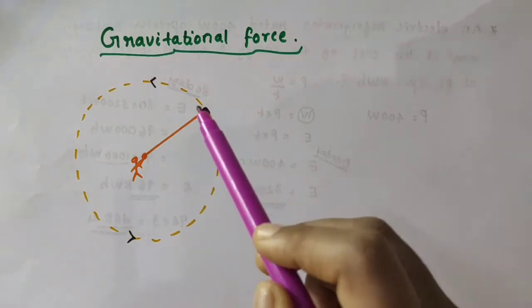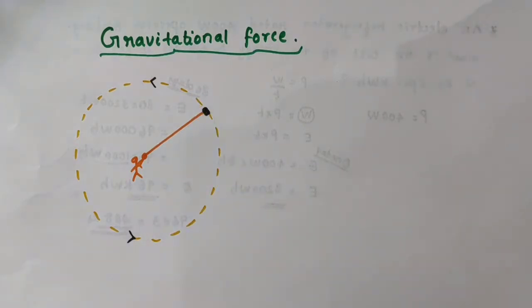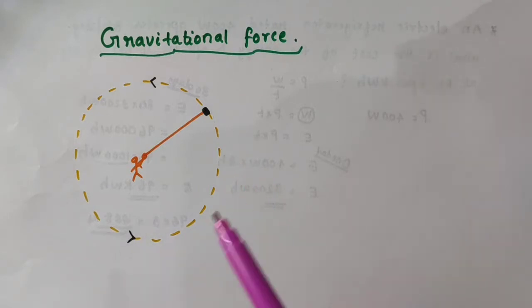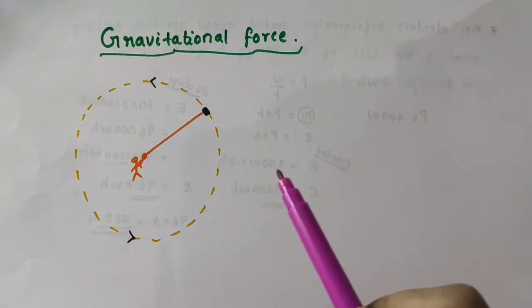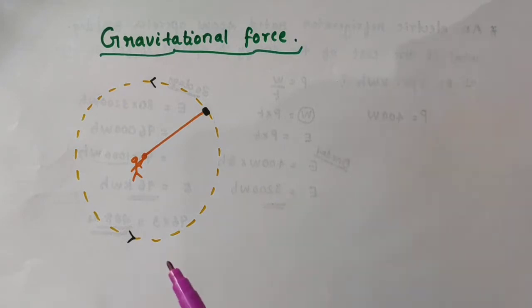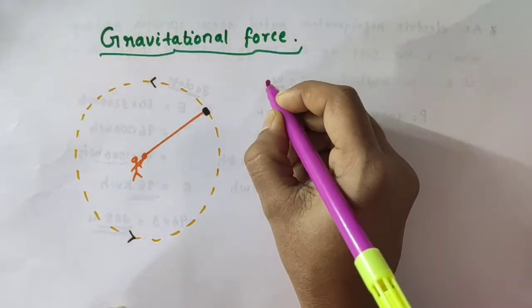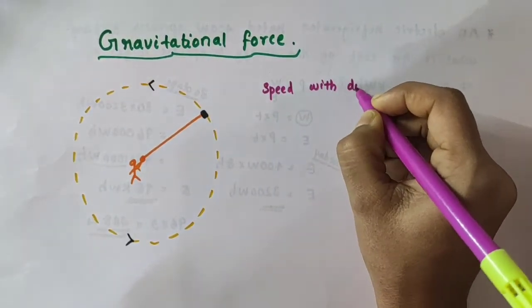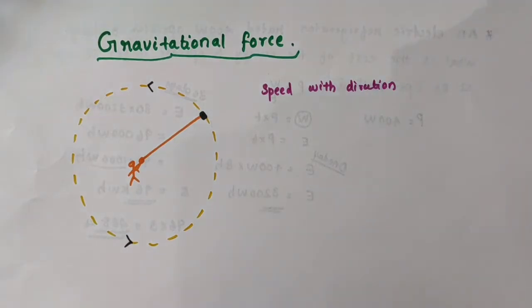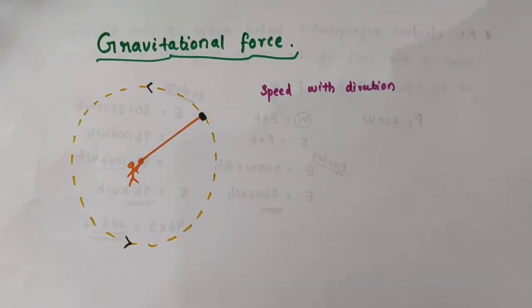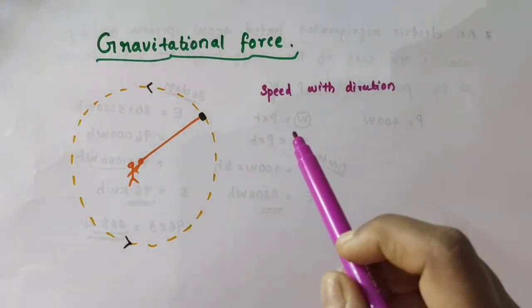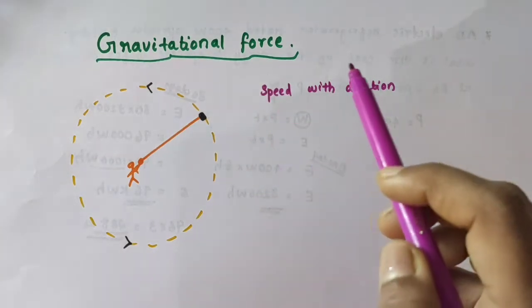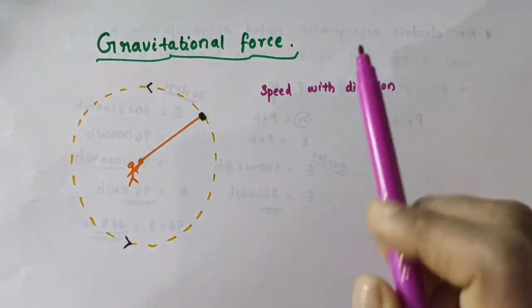Now, is the motion of the stone an accelerated motion? We know that acceleration comes into play only when there is a change in velocity. What is velocity? In simple words, we can take velocity as speed with direction. The velocity of an object changes when there is a change in either the speed or direction of the object.